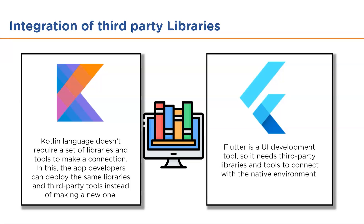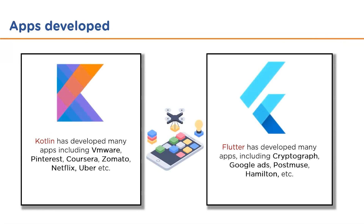Moving to integration of third-party libraries: Kotlin doesn't require a special set of libraries and tools to make connections because it works with the native platform ecosystem, allowing app developers to deploy the same libraries and third-party tools instead of creating new ones. Flutter, being a UI development tool, needs third-party libraries and tools to connect with the native environment. Notable apps built with Kotlin include VMware, Pinterest, Coursera, Zomato, Netflix, and Uber. Flutter-built apps include Cryptograph, Google Ads, PostMuse, Hamilton, and AppTree.